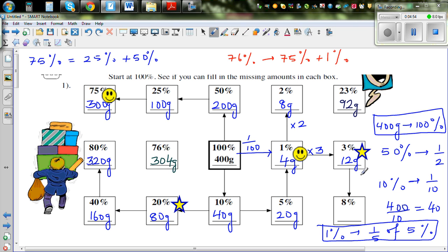Now 8%. I forgot 8%. From 3%, how can you find 8%? I'm going to use 5%. Let me do a different notation. This is 5% and this is 3%. 5% and 3% gives you 8%, so this is 32 grams, because 20 plus 12 is 32 grams.